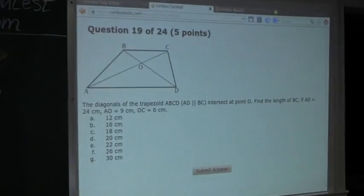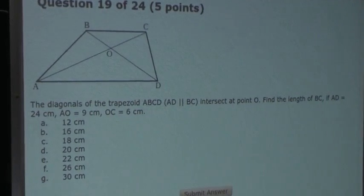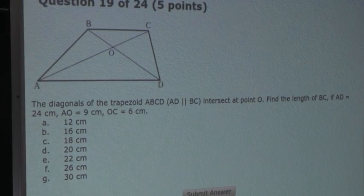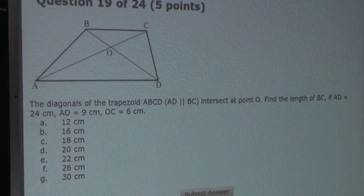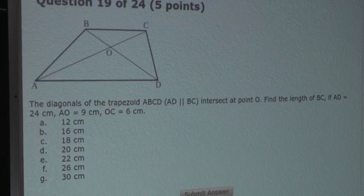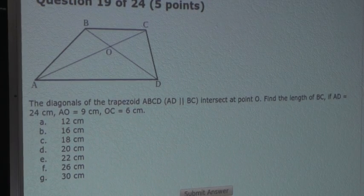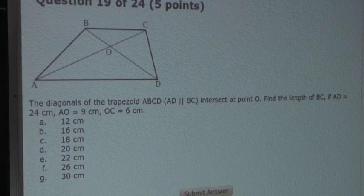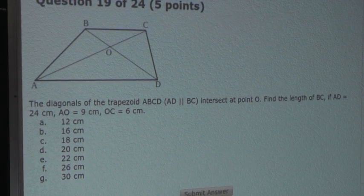So the question is, the diagonals of the trapezoid ABCD, where the line AD is parallel to the line BC, intersect at point O. Find the length of BC if AD is equal to 24 cm, AO is equal to 9 cm, and OC is equal to 6 cm.